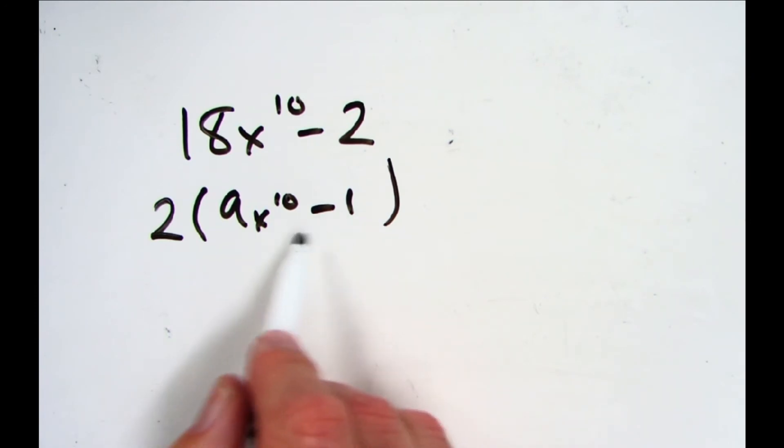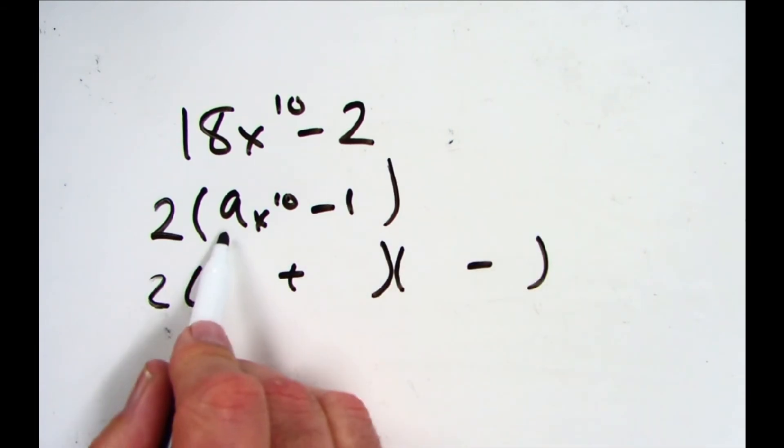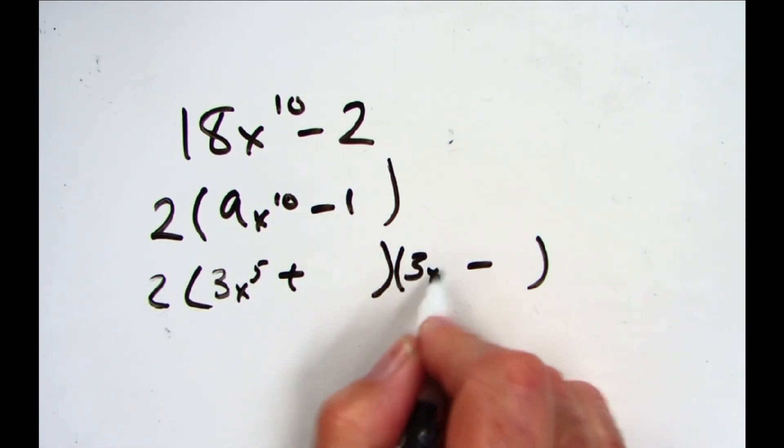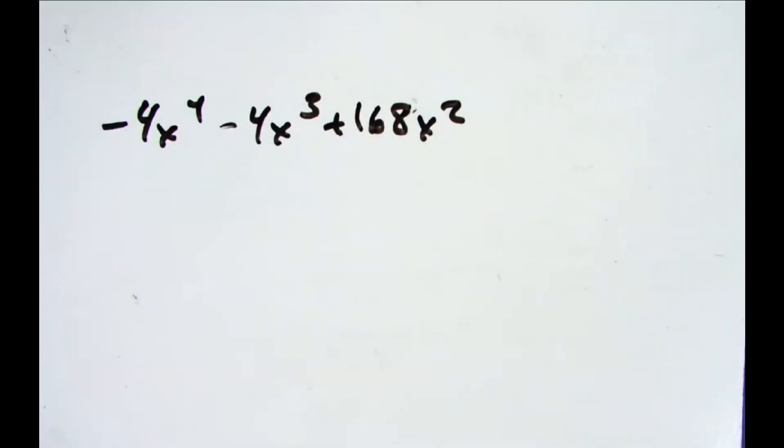Oh! 9 is a perfect square, x to the 10th is a perfect square with an even exponent, and 1 is a perfect square - we often forget that. So it's a difference of two squares, so we automatically just go plus and minus. What would make 9x¹⁰? 3x⁵ times 3x⁵. What would make 1? There's a tough one: 1 times 1. Make sure you check again - that's not a perfect square, so we can't go any further.